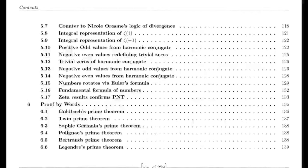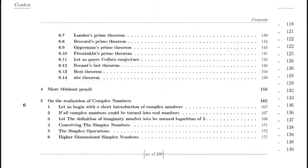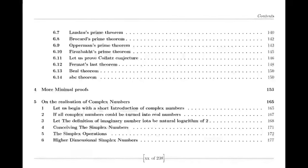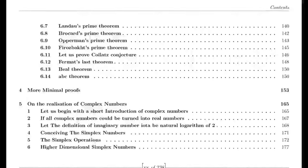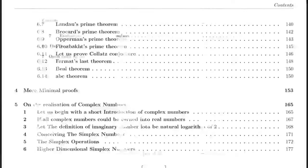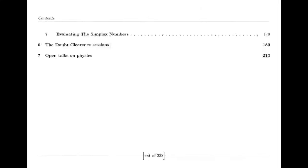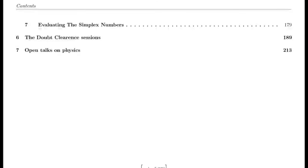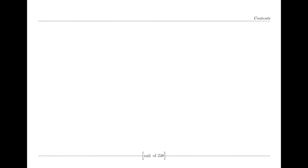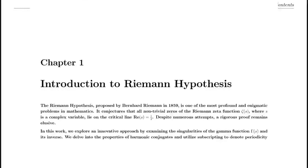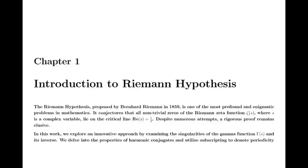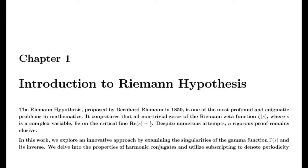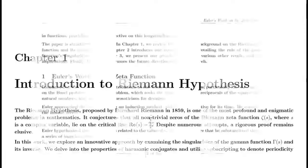Today, the zeta function stands as a symbol of mathematical beauty, its zeros a haunting enigma that continues to inspire generations of mathematicians. The questions raised by Riemann's conjectures echo through time, urging us to look deeper into the fabric of numbers, reminding us that in the pursuit of knowledge, some mysteries may never be fully unraveled, yet they drive us forward into the realms of discovery. And so the story of the zeta function continues — a testament to the endless curiosity and creativity of the human mind, forever seeking the patterns hidden within the numbers.